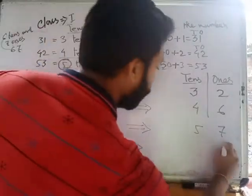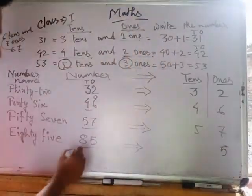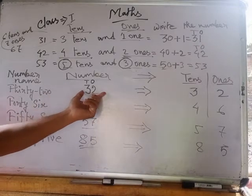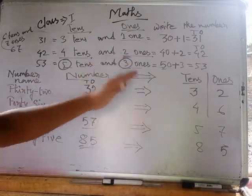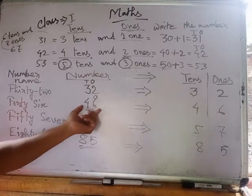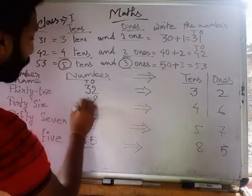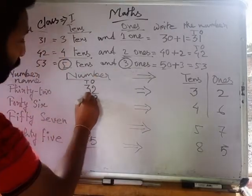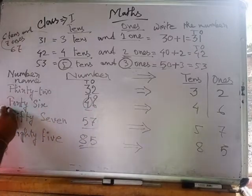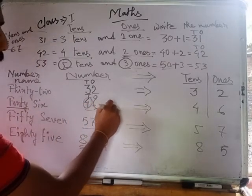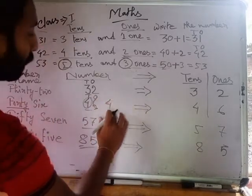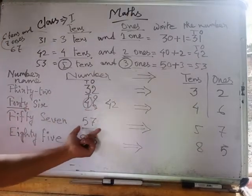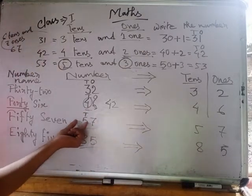For 57, we write 7 at ones and 5 at tens. For 85, five is at the place of ones and eight is at the place of tens. Do you understand? Numbers like 32, 33, 34, 35 follow this pattern. If four is at the place of tens, that means it is 40. After 40, if we write 1 it is 41, if we write 2 it is 42, if we write 6 it is 46.